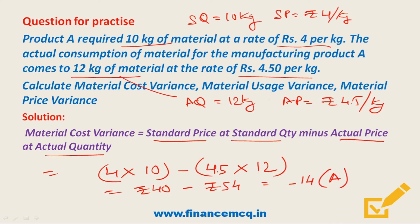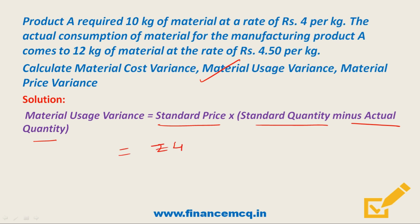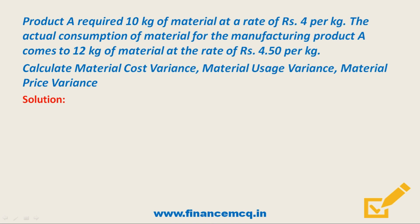Next, Material Usage Variance. Formula: Standard Price × (Standard Quantity minus Actual Quantity) = ₹4 × (10 minus 12) = ₹4 × (minus 2) = minus ₹8. Again a negative output, so this is an adverse variance.